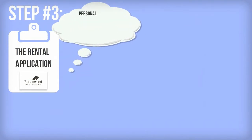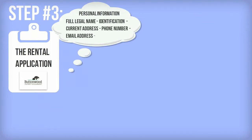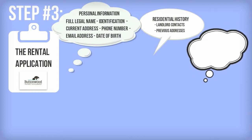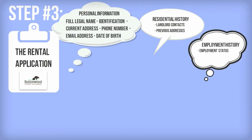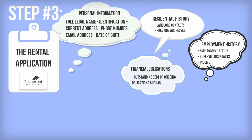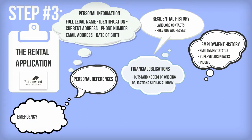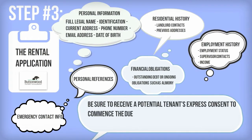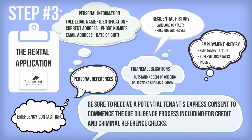Step 3: The Rental Application. Common information to request includes personal information — full legal name, a piece of identification, current address, phone and email address, and date of birth. Also request residential history, contact information for landlords and previous home addresses, employment history, status of employment, supervisor contact details, income, financial obligations, outstanding debt or ongoing obligations such as alimony, personal references, and emergency contact information. Be sure to receive a potential tenant's express consent to commence the due diligence process, including for credit and criminal reference checks.